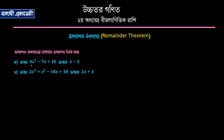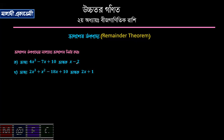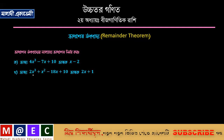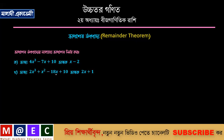The first polynomial is 4x cubed minus 7x plus 10, and the divisor is x minus 2. The second polynomial is 2x cubed plus x squared minus 18x plus 10, and the divisor is 2x plus 1.